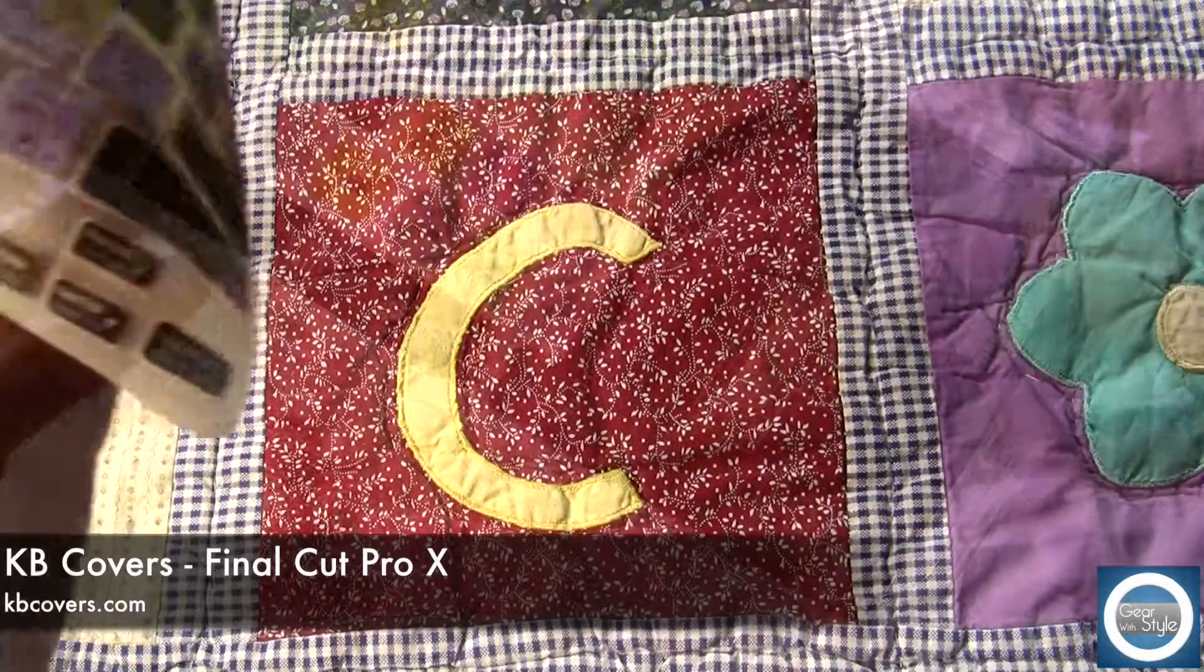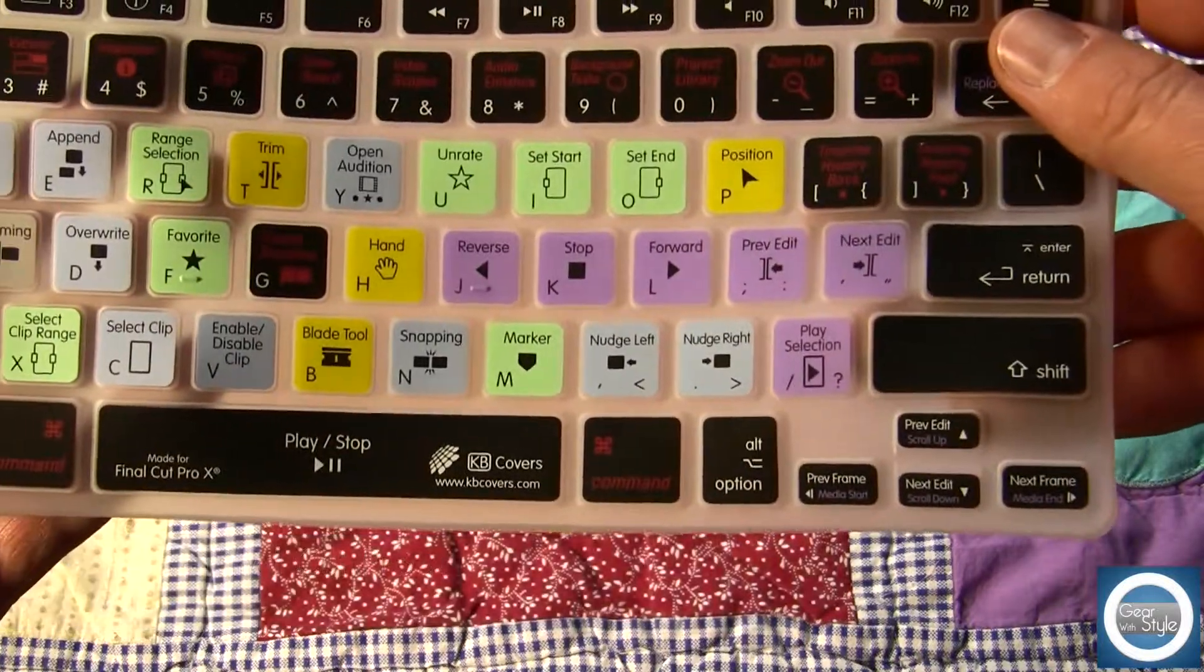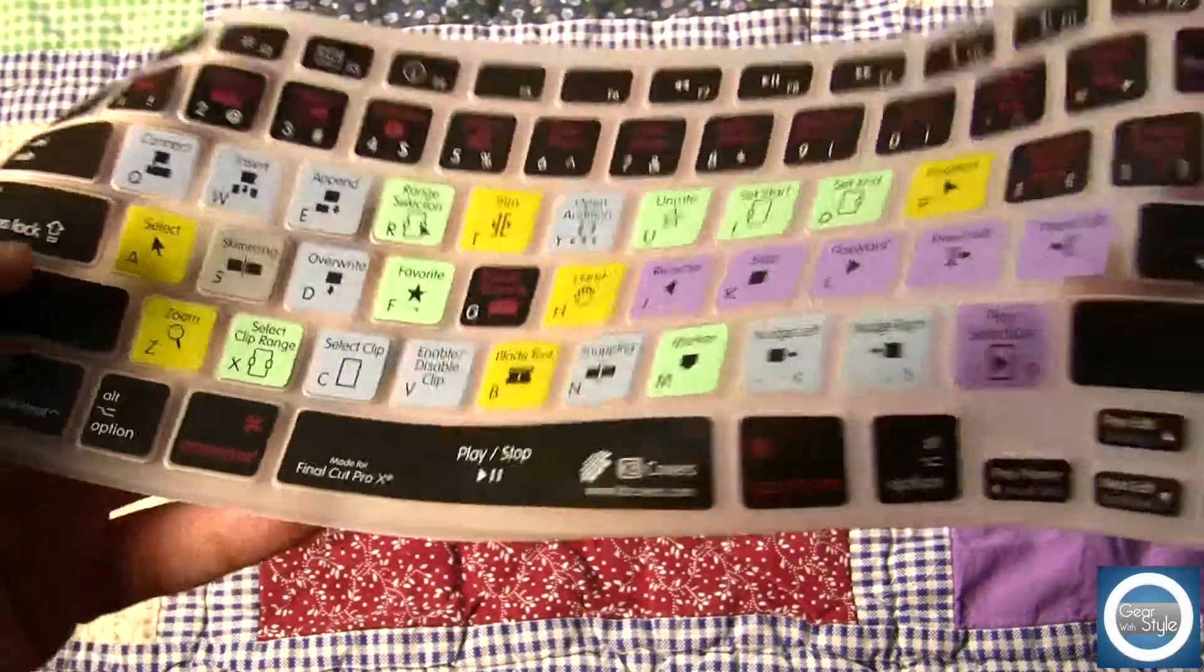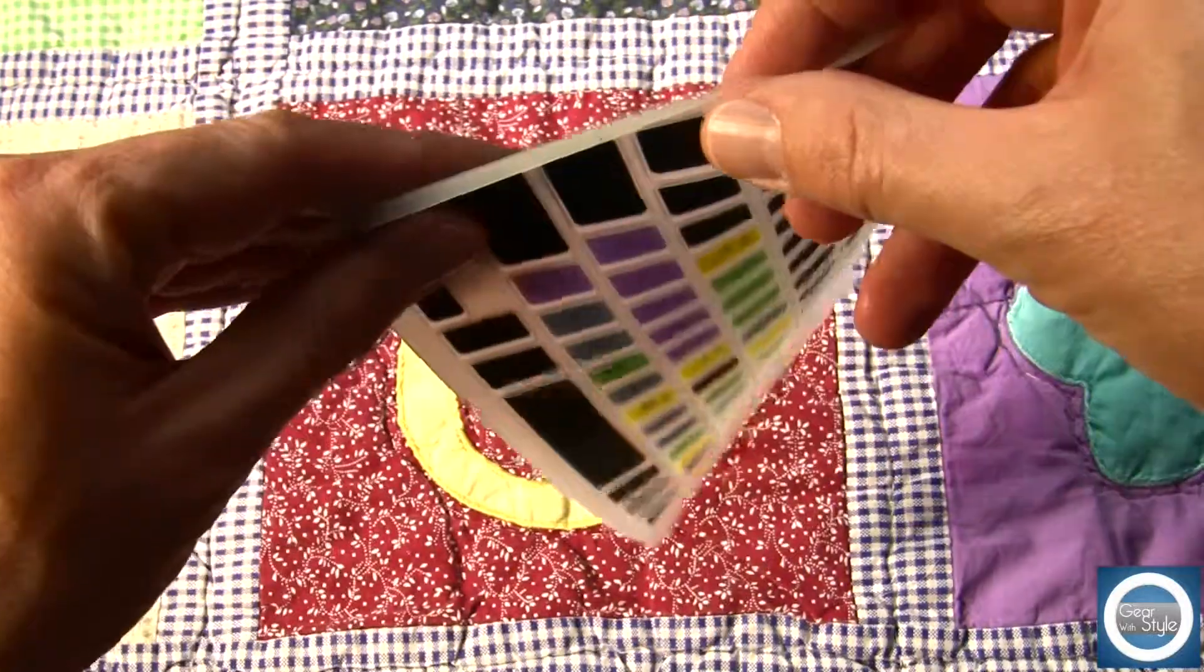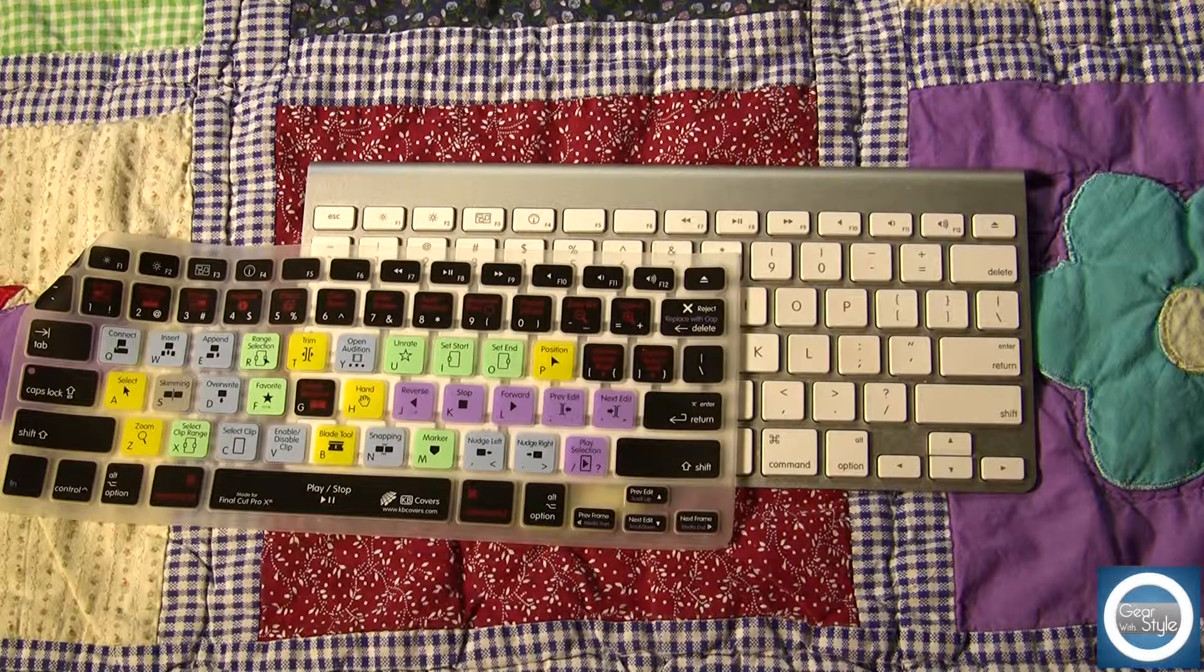This is designed for the compact wired or wireless Apple keyboard and it's basically a silicone overlay to place over your normal keys to give you access to all the shortcuts in case you're not as familiar with those.